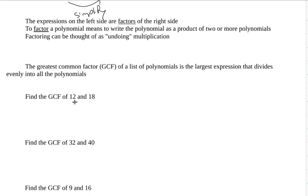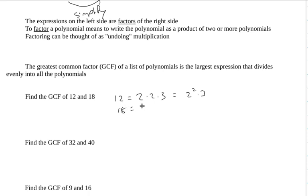If you're trying to find the greatest common factor of two integers — we saw this back in chapter 1 — I recommend we think of the prime factorization. So, 12 is 2 times 2 times 3, which I'll write as 2 squared times 3. I have two copies of the 2 and one copy of the 3. And 18 is 2 times 3 times 3, so it's 2 times 3 squared — two copies of the 3 and one copy of the 2.